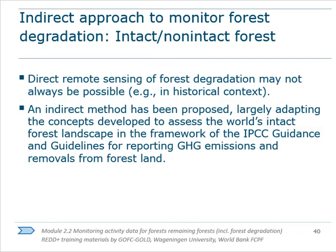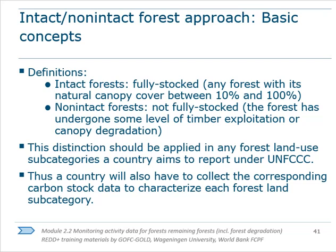Where it's not possible or practical to apply direct approaches to activity data development for forest degradation activities, it may be appropriate to consider a more cost-effective indirect approach. This method applies concepts developed to assess the world's intact forest landscape in the framework of the IPCC guidance and guidelines for reporting greenhouse gas emissions and removals from forest land. Under this indirect approach, forests are defined as either intact or non-intact based on stocking level. Intact forests are assumed to be fully stocked and undisturbed, whereas non-intact forests are assumed to have been subject to some form of forest degradation. These two categories are then objectively and systematically applied to all forest land across the REDD program area, and the classification of intact versus non-intact would be defined according to country-specific parameters, like proximity to infrastructure or the presence of burned lands.